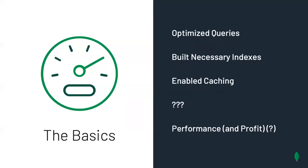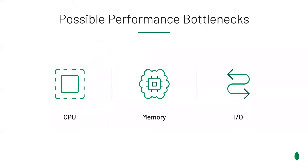Your business is really taking off and your MongoDB deployment is under pressure. You've gone through the performance checklist, optimized your queries, built the necessary indexes, enabled caching, yet performance is not quite what it used to be. In general, there are three sources of database performance bottlenecks: CPU, memory, and IO — where IO could be either network performance or storage performance.